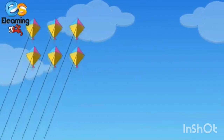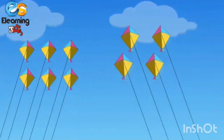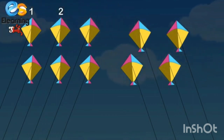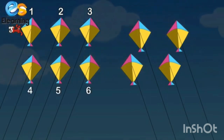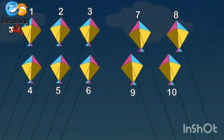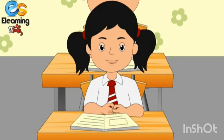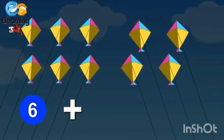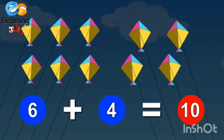Six kites and four more kites. How many kites, children? One, two, three, four, five, six, seven, eight, nine, ten. Six kites and four kites — ten kites. Excellent. Six plus four is equal to ten.